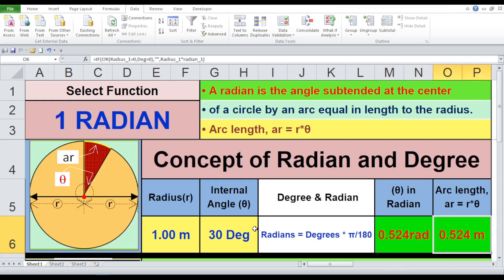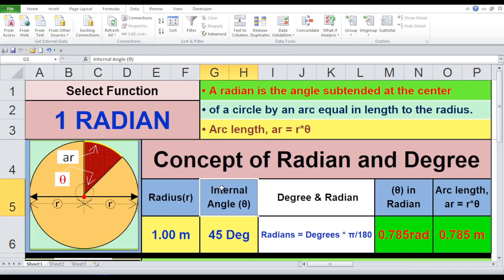Trial 2. Radius 1 meter, angle 45 degrees, theta equals 0.785 radians, arc length equals 0.785 meters.